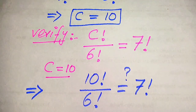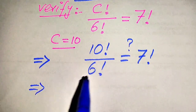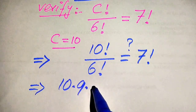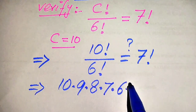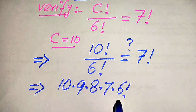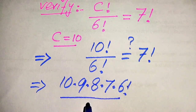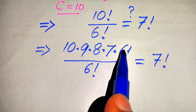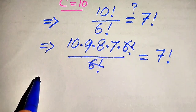To check if both sides are equal, we focus on 10 factorial and break it as 10 × 9 × 8 × 7 × 6 factorial. We stop there because 6 factorial divided by 6 factorial cancels out, leaving us with 10 × 9 × 8 × 7 equals 7 factorial.